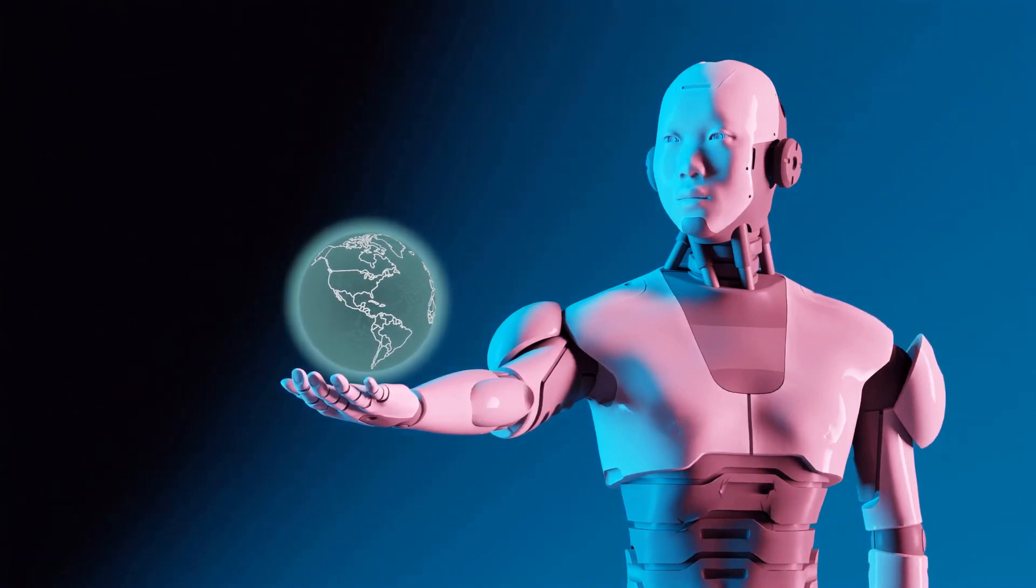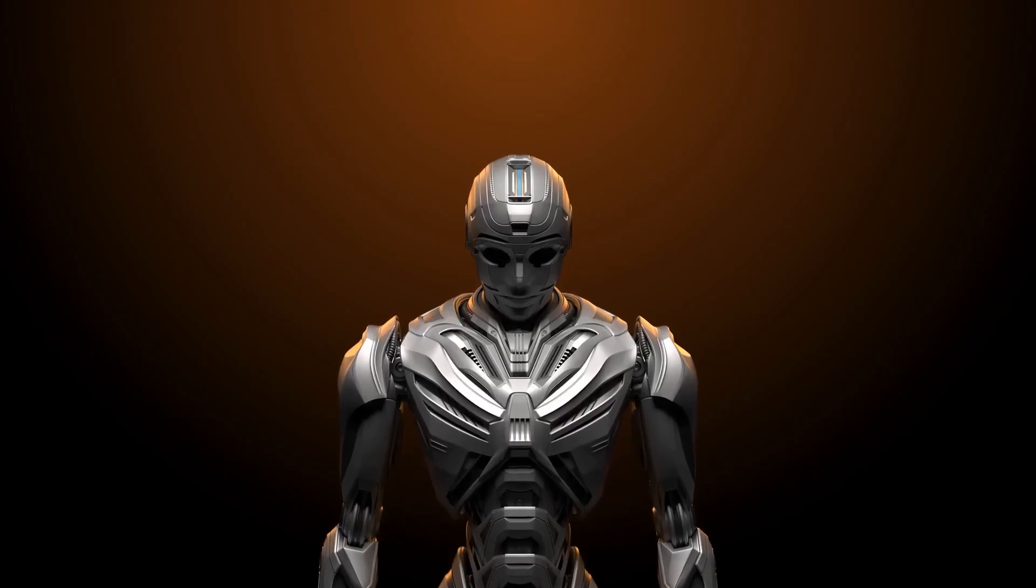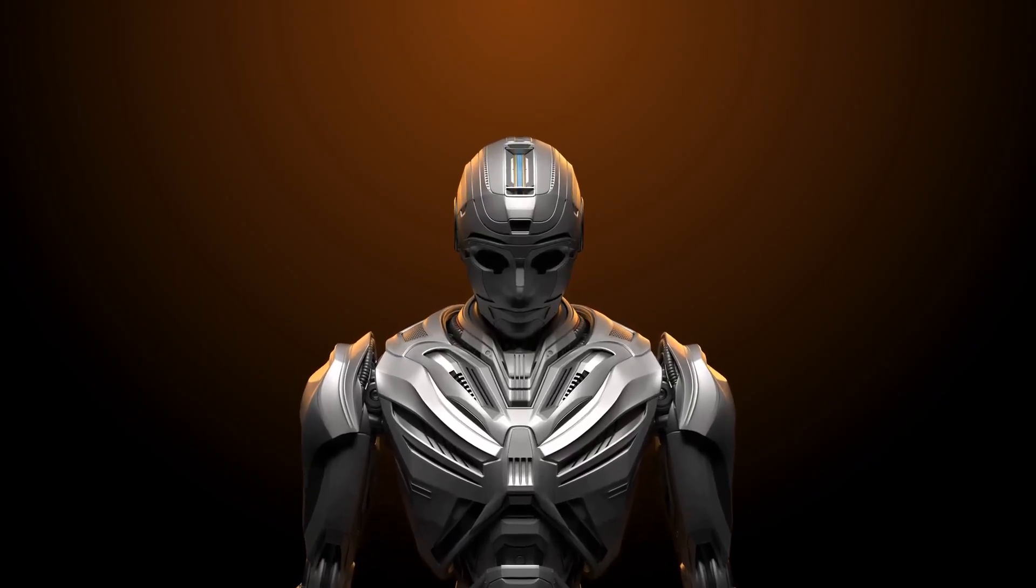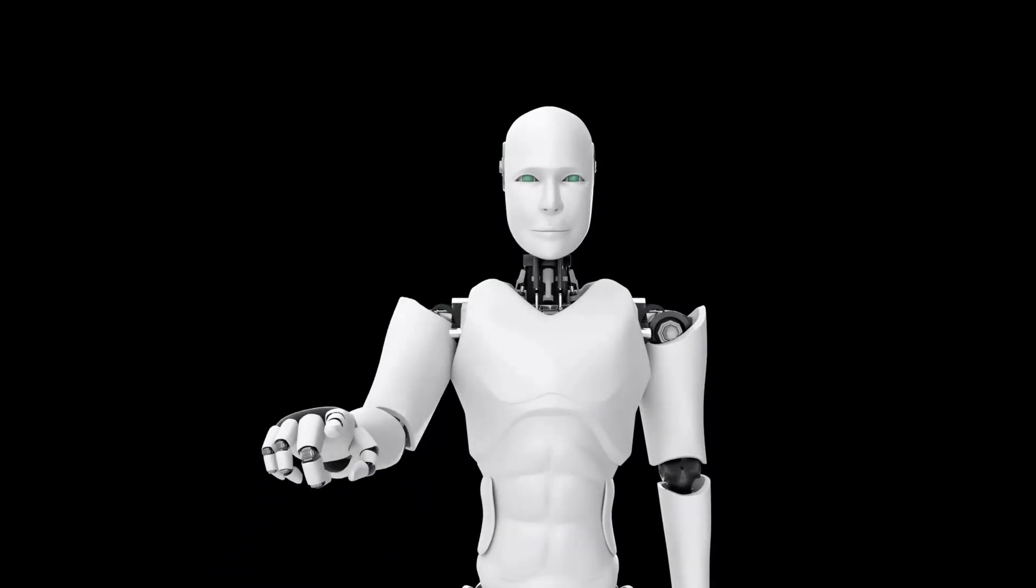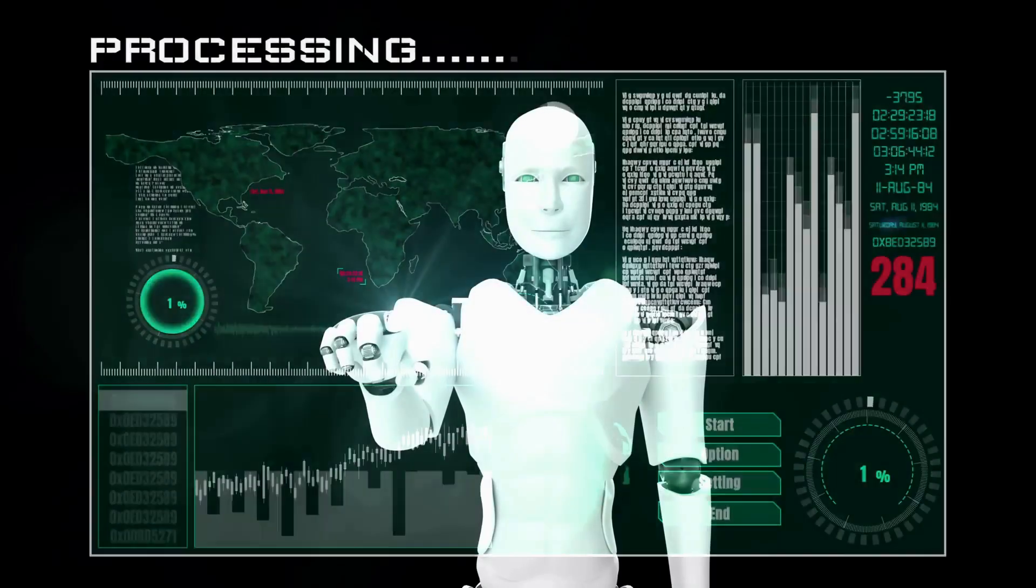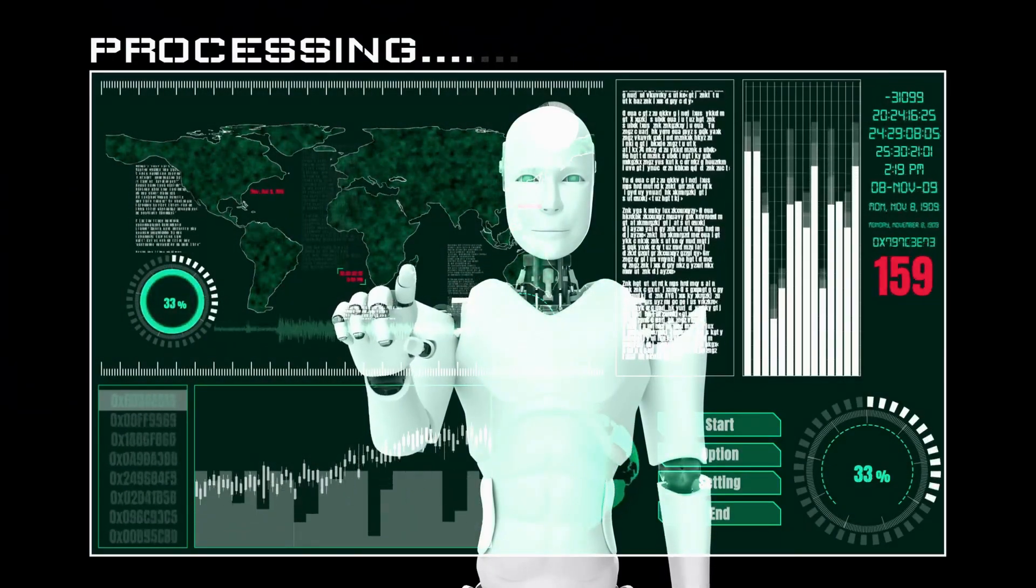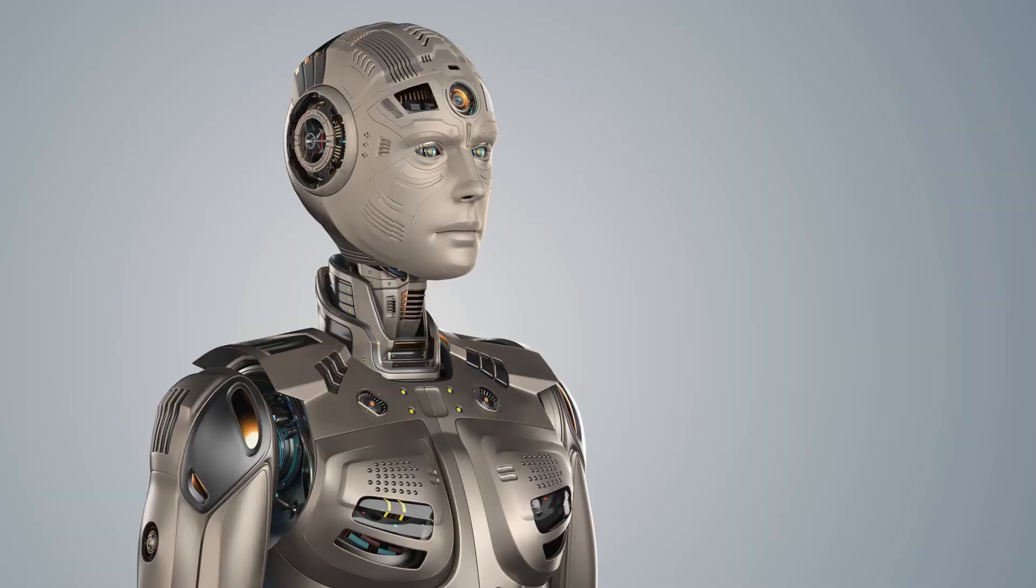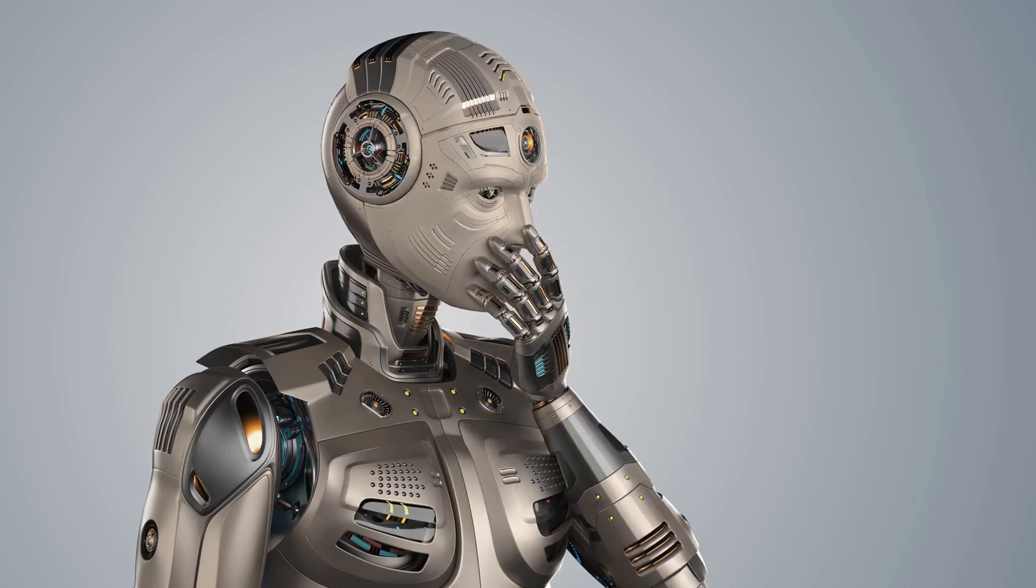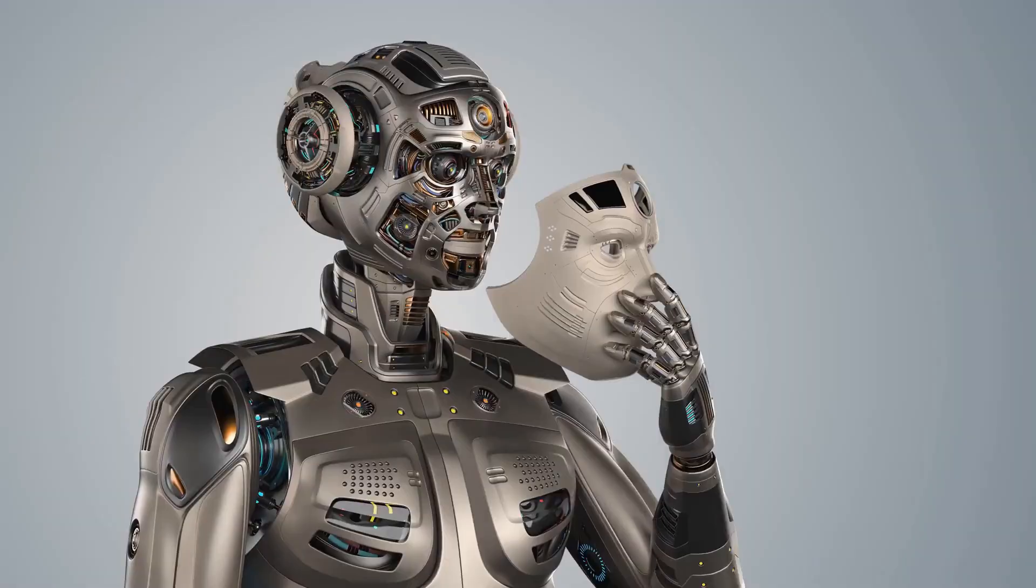But building a brain like this is no easy feat. It requires a deep understanding of both robotics and human cognition, and the ability to blend the two seamlessly. These AI models need to be robust, capable of handling a wide range of scenarios without faltering. They need to be efficient, able to process vast amounts of data in the blink of an eye. And most importantly, they need to be reliable, ensuring the safety and well-being of those interacting with the robot.